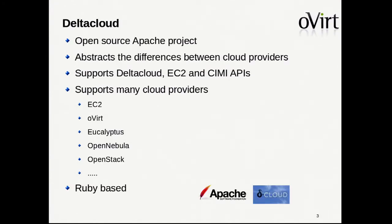Delta Cloud is a Ruby-based open source Apache project. It abstracts the differences between different cloud providers and between the different APIs. Currently supported are the Delta Cloud API, EC2 API, and the CIMI API. And on the other end, it supports many cloud providers: EC2, oVirt, OpenStack, OpenNebula. And this is really a nice thing to have — one centralized API over many different providers.